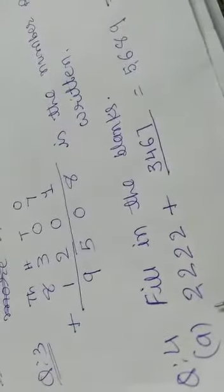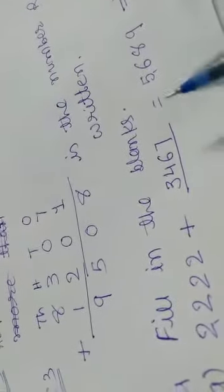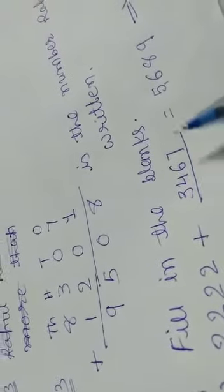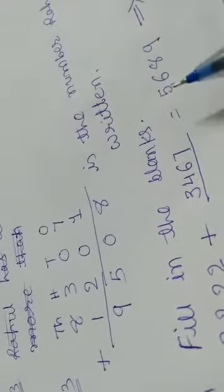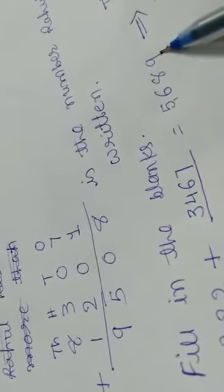Question number 4: Fill in the blanks. Part A is 2222 plus a number equals 5689.